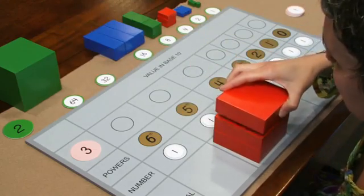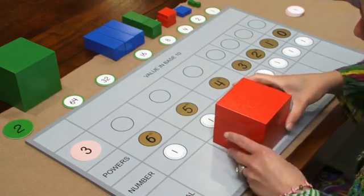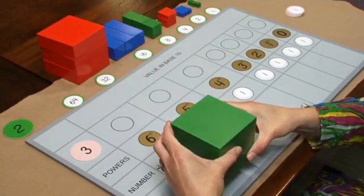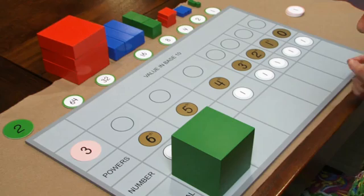1, 2, 3. I can exchange the 3 red rectangular prisms for the largest value represented on our decimal board, the largest green cube.